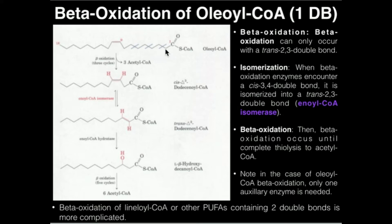Initially, when we do oleoyl-CoA beta-oxidation, we have three rounds of normal beta-oxidation with the four enzymes: fatty acyl-CoA dehydrogenase, enoyl-CoA hydratase, beta-hydroxy acyl-CoA dehydrogenase, and thiolase. You can see these blue lines right here that are cutting off two-carbon units — we have three rounds of that — giving us this fatty acid right here.